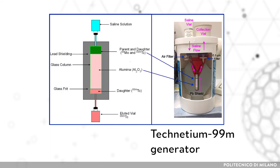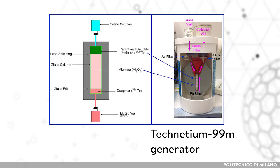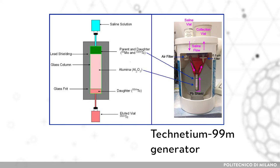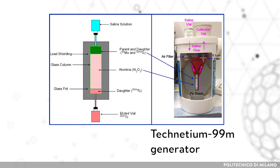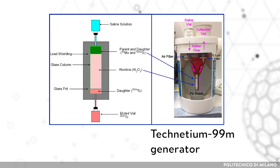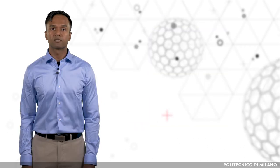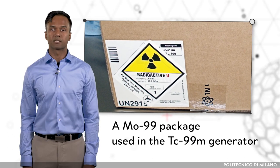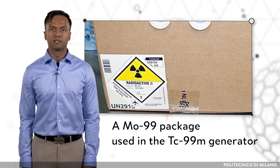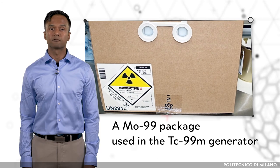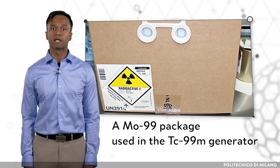Consider again the example of molybdenum and technetium. Technetium-99m has a short half-life of only six hours. Luckily, molybdenum-99, its parent, has a half-life of 66 hours, which allows it to be produced at the research reactor or the accelerator and prepared as a generator in the generator manufacturing facility. The generator is then transported to the hospital where technetium-99m is extracted, and it can be used for two weeks, after which fresh molybdenum-99 is required.